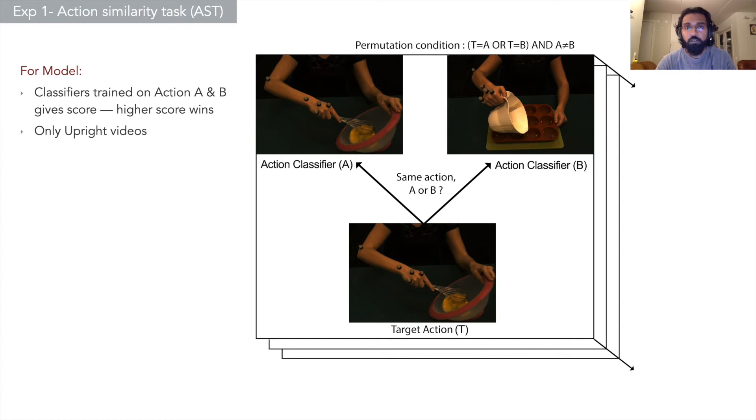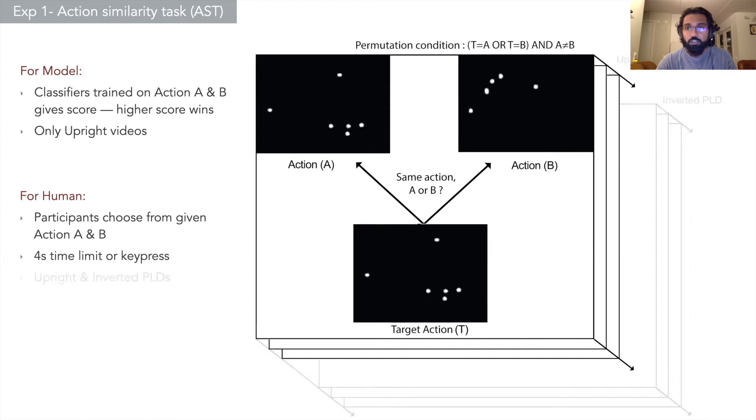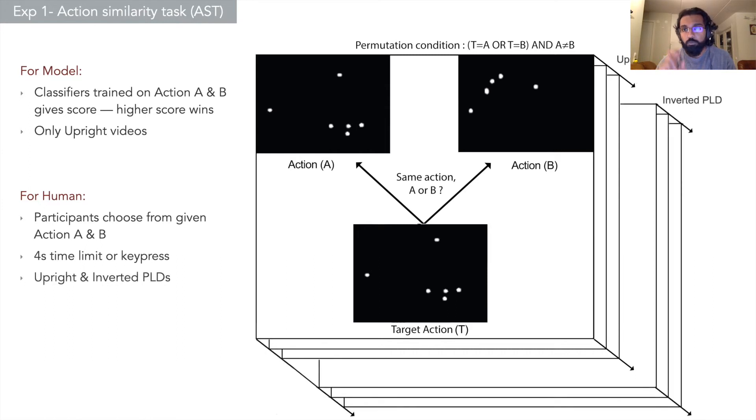Moving on to the task, two actions are pitted against each other for the target and the classifier with the highest score will win that trial. The video is given to the computational model. The same task design is used for the humans, just with point light displays, and we have two conditions: upright and inverted. This is to test for implicit semantic access.